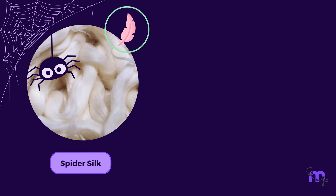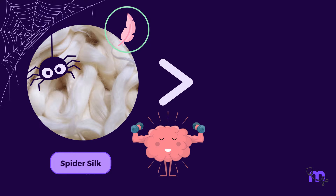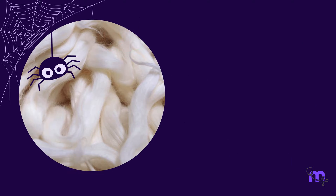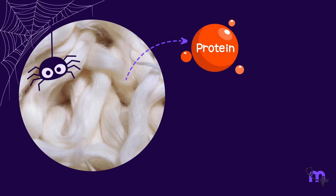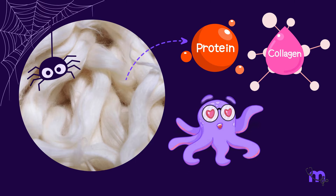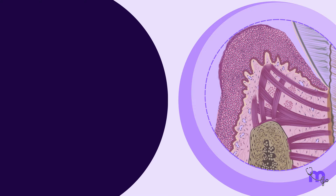Did you know that spider silk, one of the softest materials, is stronger than steel? It is primarily made of proteins, with collagen being a major component. So in a way, one of nature's most delicate materials owes its strength to the mighty collagen.